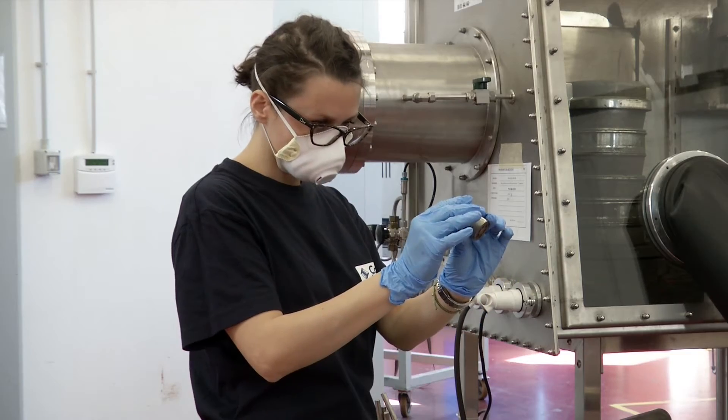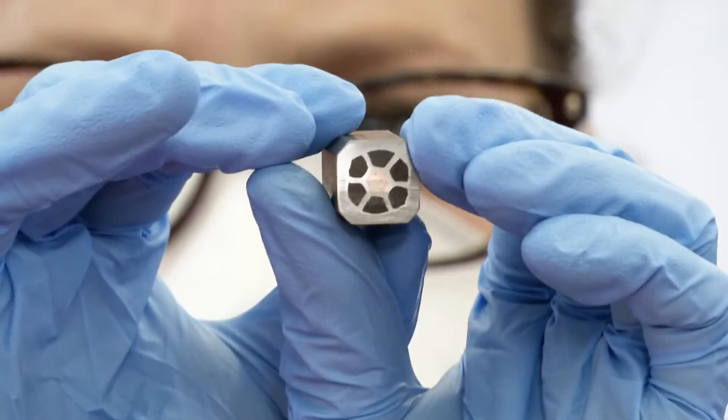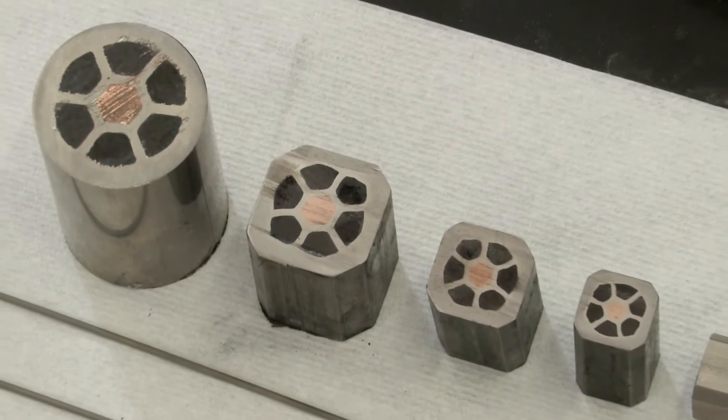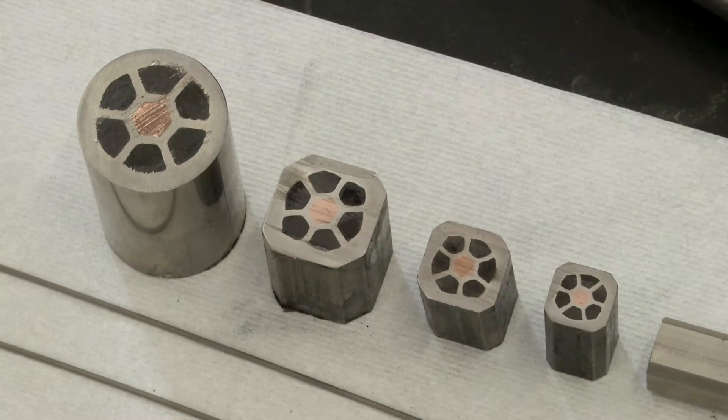This is achieved by making the diameter smaller and smaller. Here we can see different sections of the tube as it progressively becomes a wire.